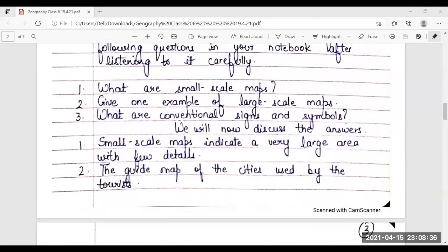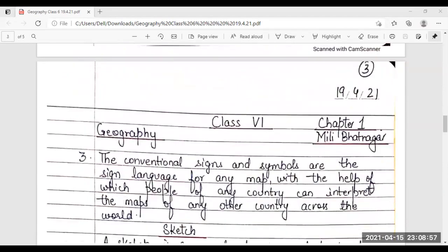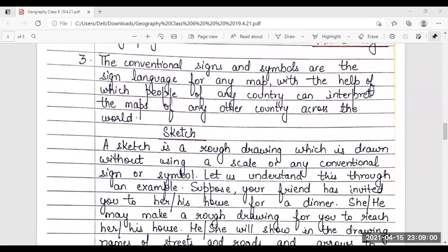We will now discuss the answers. Number one. Small scale maps indicate a very large area with few details. Number two. The guide map of cities used by the tourist. Number three. The conventional signs and symbols are the sign language for any map, with the help of which people of any country can interpret the maps of any other country across the world.